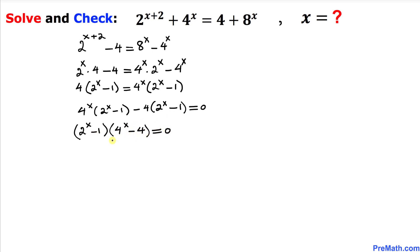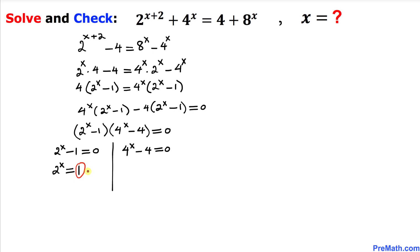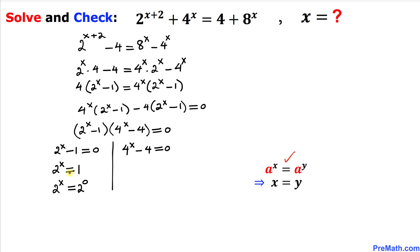Setting the first factor equal to zero: 2 power x minus 1 equals 0, so 2 power x equals 1. We can write 1 as 2 power 0, giving us 2 power x equals 2 power 0. Since the bases are the same, we equate the exponents, and therefore x equals 0 is one of our solutions.